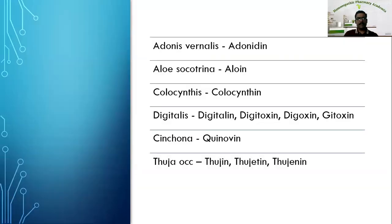Some examples of glycosides: Adonis vernalis — adonin (note the name ends in -IN). Aloe socotrina — aloin. Colocynthis — colocynthin. Digitalis — digitalin, digitoxin, digoxin, gitoxin. Cinchona — quinovin. Thuja occidentalis — thujin, thujittin, thujanin. Note that sometimes the same plant may contain both alkaloids and glycosides among other important phytoconstituents — it is a mixture.